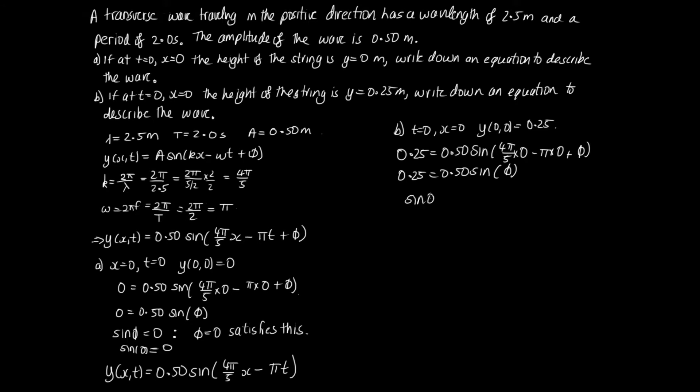So what we have now is 0.25 is equal to 0.50 sin of phi. So we've got sin of phi is equal to 0.25 over 0.50. So that's equal to a half. So we can solve this on the calculator. So we can say, phi is equal to the inverse sin of a half. And solving that, we end up with pi on 6.